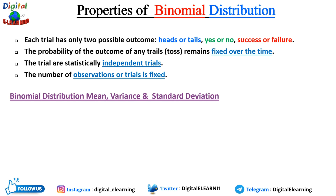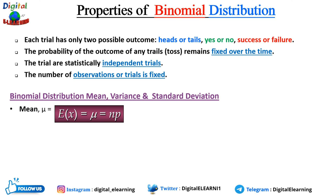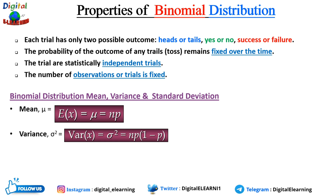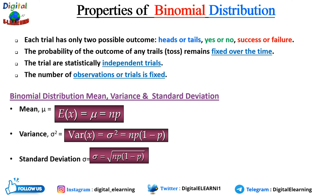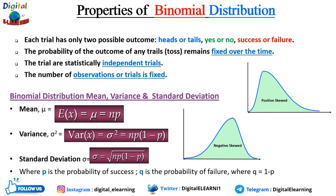Now let us understand binomial distribution mean, variance, and standard deviation. The mean is calculated as μ = np, variance as σ² = np(1−p), and standard deviation as σ = √(np(1−p)), where p is the probability of success and q = 1−p. When p equals 0.5, the distribution is symmetric around the mean. When p is greater than 0.5, the distribution is negatively skewed (skewed left). When p is less than 0.5, the distribution is positively skewed (skewed right).